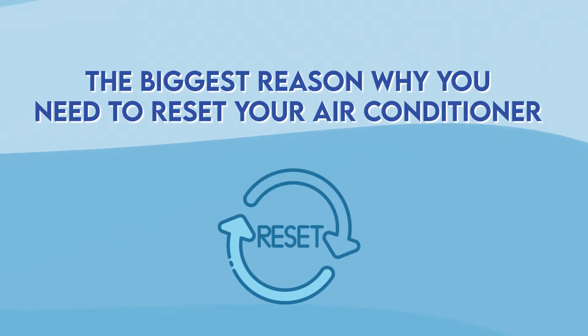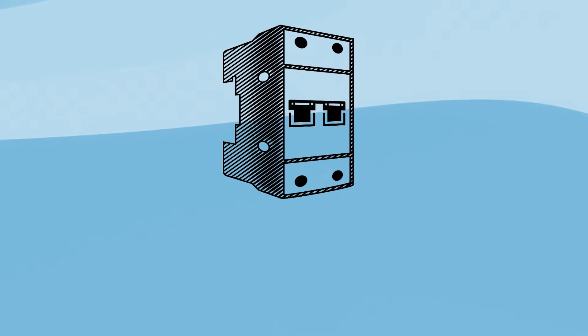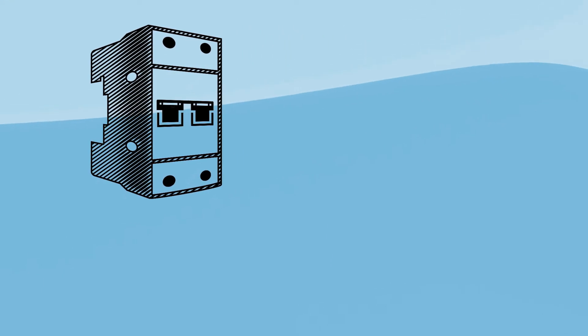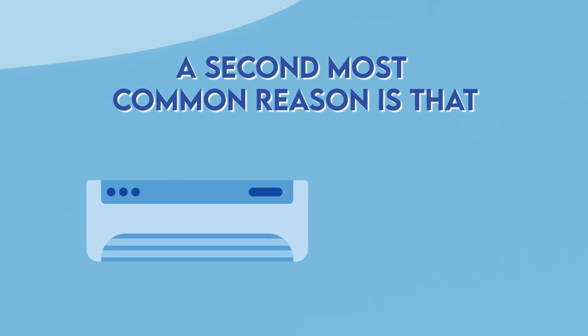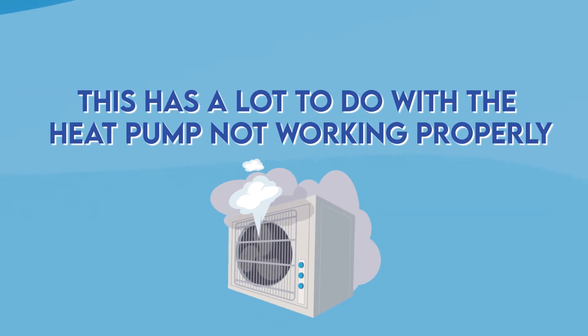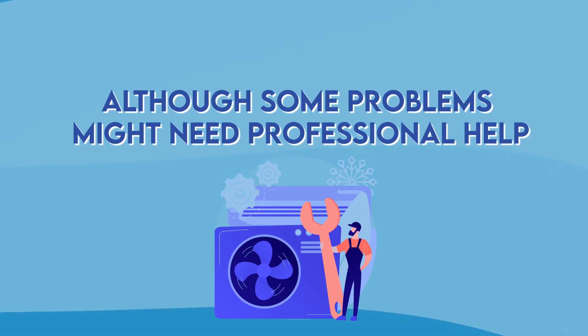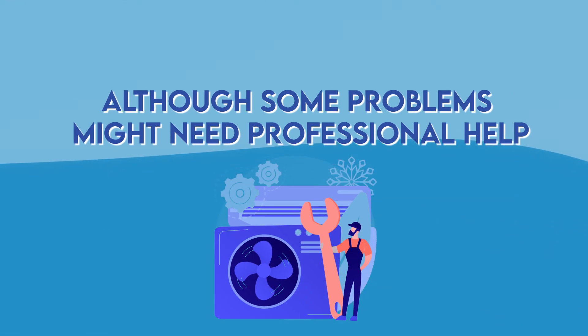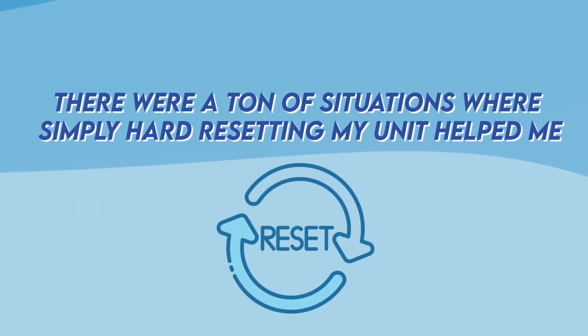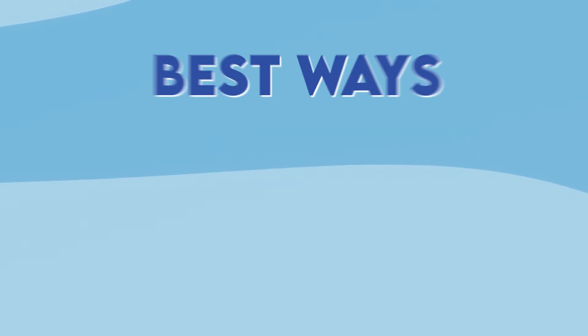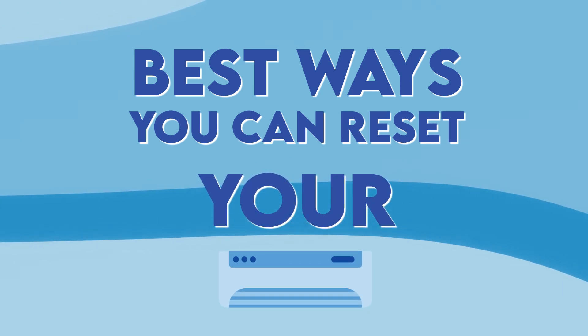The biggest reason why you need to reset your air conditioner is that the protection circuit breaker in your unit kicks in, and that usually happens after a power outage. The second most common reason is that your air conditioner might be blowing warm air, even if you set it to cooling. This has a lot to do with the heat pumps not working properly. Although some problems might need professional help, there are a ton of situations where simply hard resetting the unit helps a lot. So let's proceed to the best ways you can reset your air conditioner.